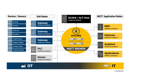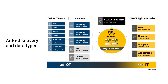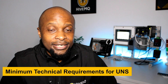Sparkplug B defines a consistent MQTT topic namespace, state management, and payload format to achieve this. It's important to mention that Sparkplug B and flat MQTT are equally capable of implementing the Unified Namespace. However, Sparkplug B has added advantages with things like auto-discovery and defined data types.